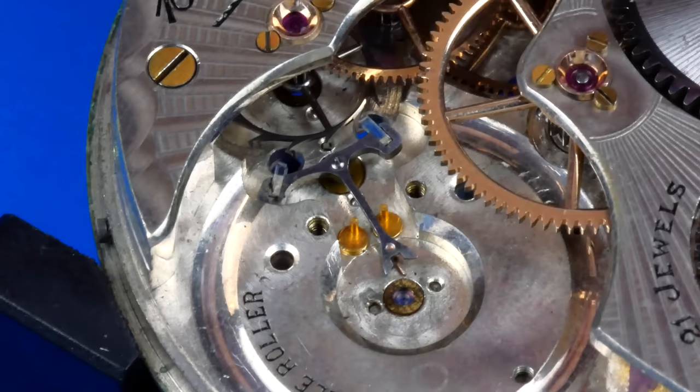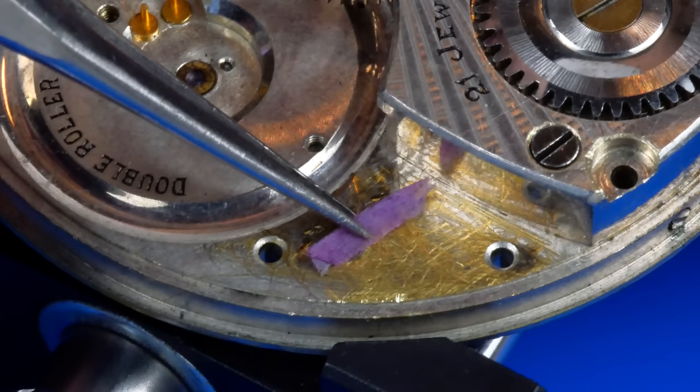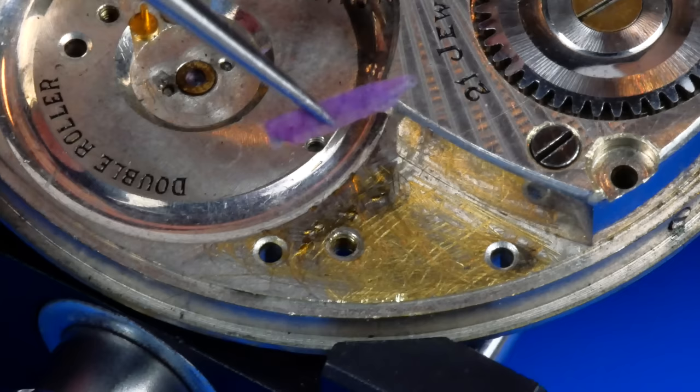The pallet bridge and pallet fork are now removed. This is where the balance cock sits. It looks like someone filed down the plate, maybe realized they went too far and then decided to shim it back up with a sliver of watch paper.